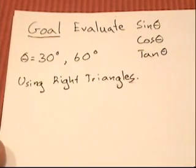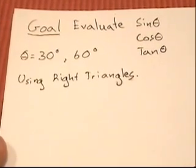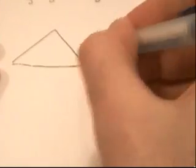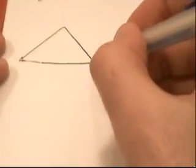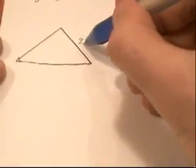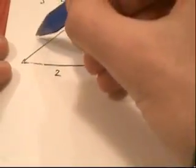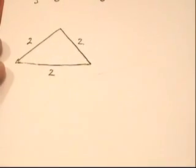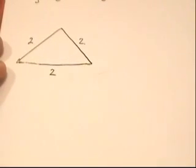The way to do this from the ground up is to start with an equilateral triangle. So let's draw an equilateral triangle. Because it's an equilateral triangle, all the sides are the same, and we'll call each side length 2. You'll see why in a second. So we have an equilateral triangle with all side lengths equal to 2.